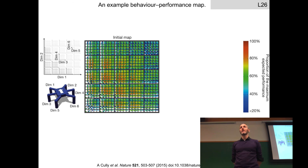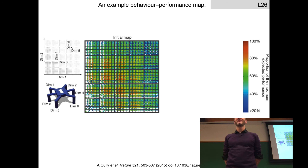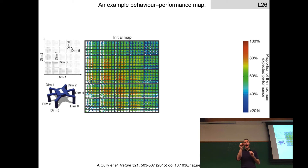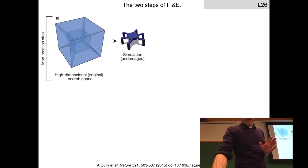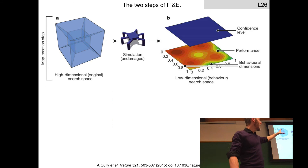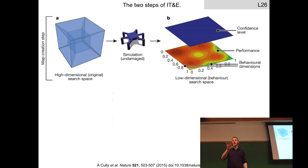A student asks: can you go over again how the robot chooses a controller and keeps choosing? We haven't gone over that yet — we're still in phase one: create the simulator and generate all these controllers. How does the damaged robot know among these 10 million or so controllers which one will compensate? That's next. So we have this high-dimensional space and now know what this low-dimensional behavioral space looks like. We're going to look at this in two dimensions, but remember it's actually six dimensions.